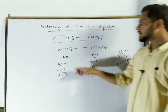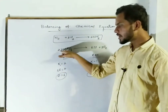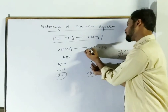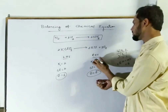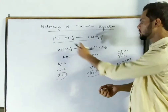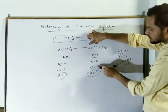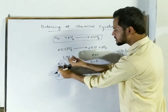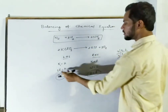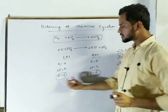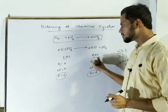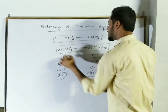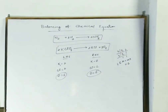In LHS we have 2 potassium and in RHS we have 1 potassium, so it should be multiplied by 2. Now potassium is balanced, and chlorine also becomes 2 on both sides. We now have 2 potassium in LHS and 2 in RHS, 2 chlorine in LHS and 2 in RHS, and 6 oxygen in LHS and 6 in RHS. So now this reaction is a balanced chemical reaction.